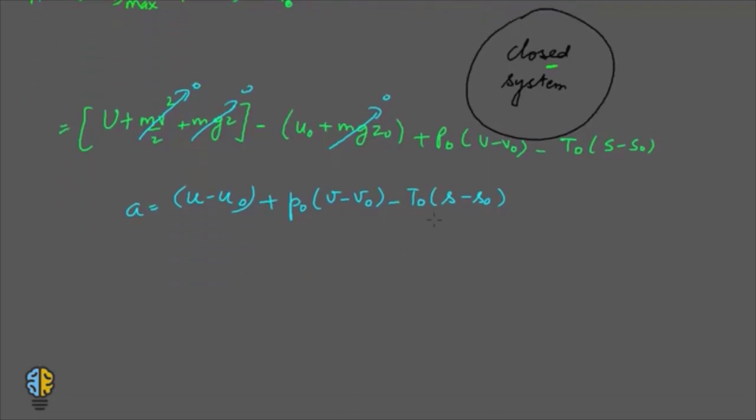Now let's combine these terms. That is, let's combine U plus P naught V minus T naught S minus U naught plus P naught V naught minus T naught S. Now this if you remember is a term called the availability function of a closed system. So this is phi minus phi naught. This is what availability is for a closed system having a non-flow process.